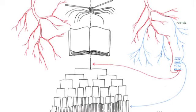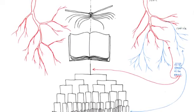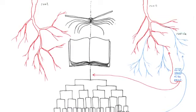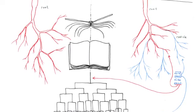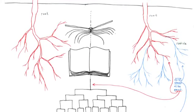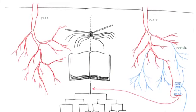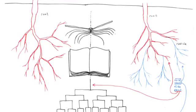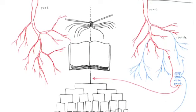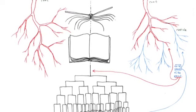Whenever a multiplicity is taken up in a structure, its growth is offset by a reduction in its laws of combination. Joyce's words, accurately described as having multiple roots, shatter the linear unity of the word, even of language, only to posit a cyclic unity of the sentence, text, or knowledge. Nietzsche's aphorisms shatter the linear unity of knowledge, only to invoke the cyclic unity of the eternal return.